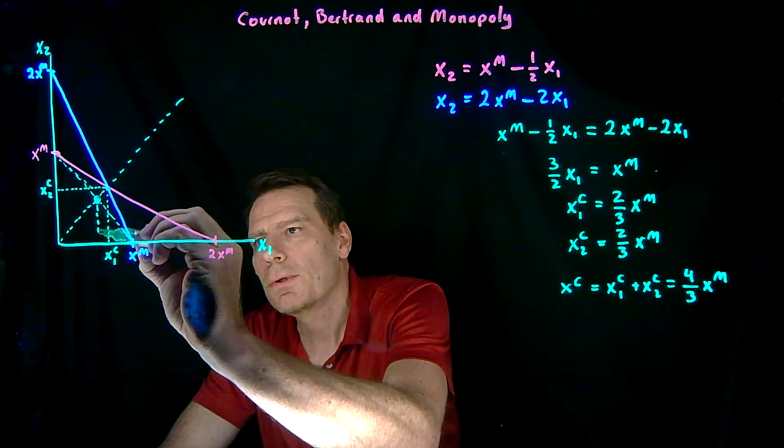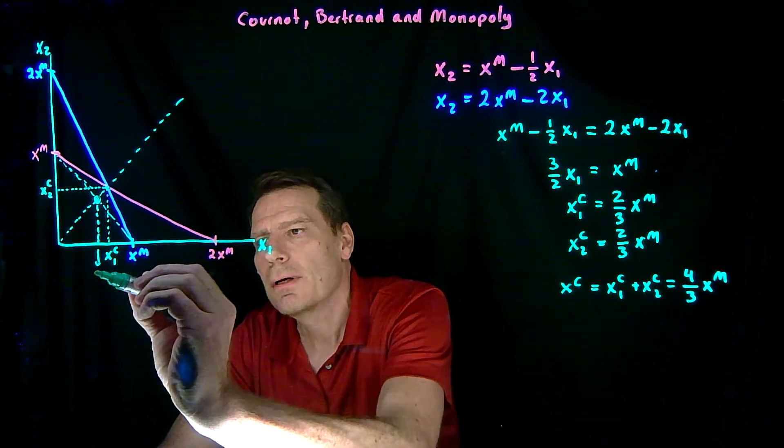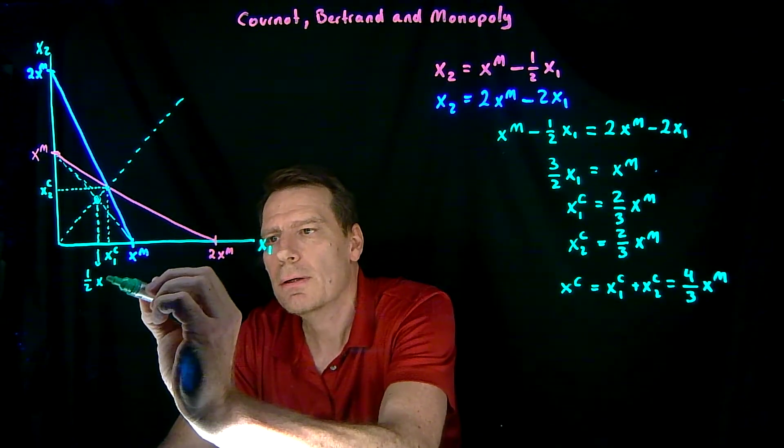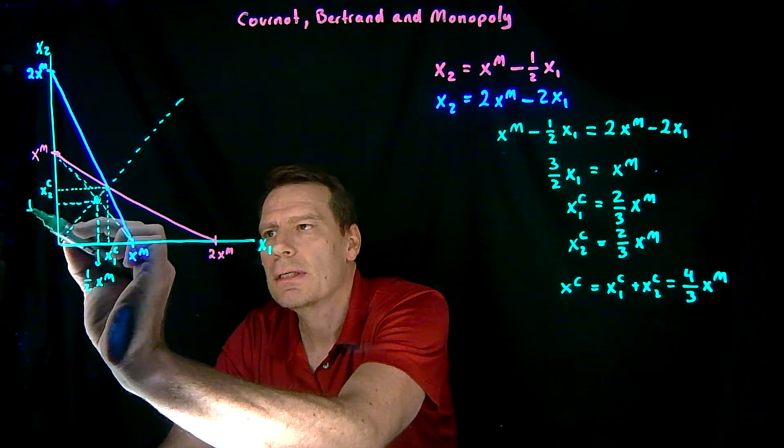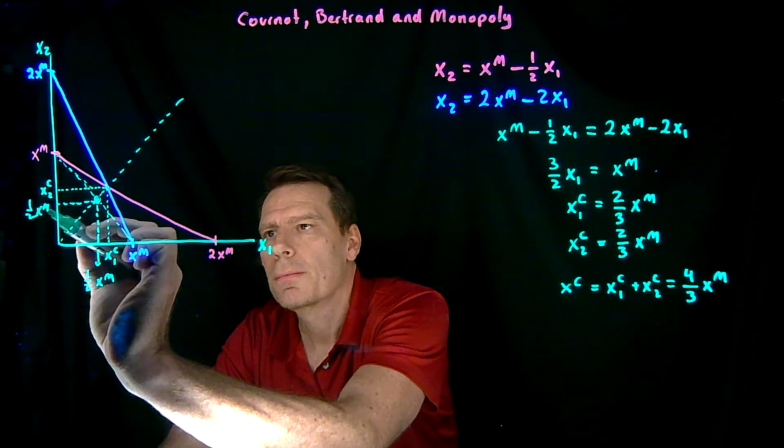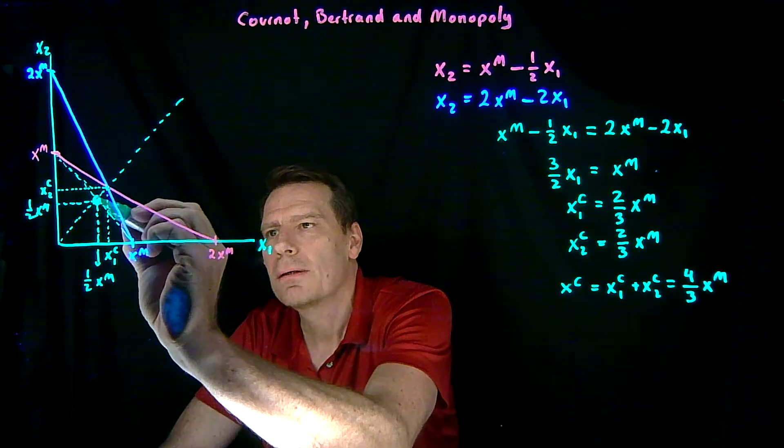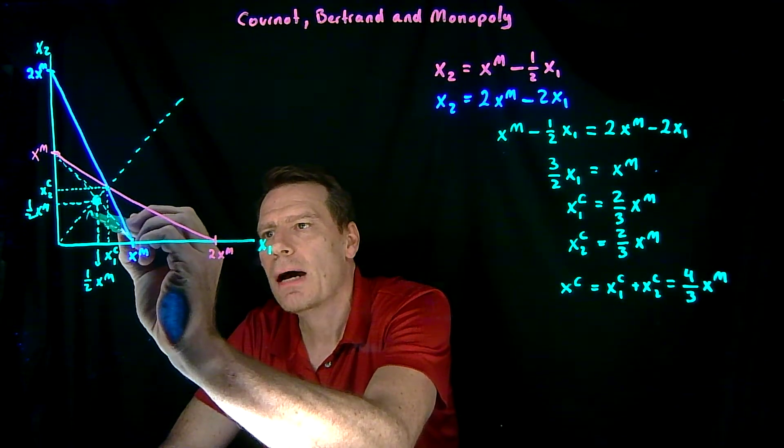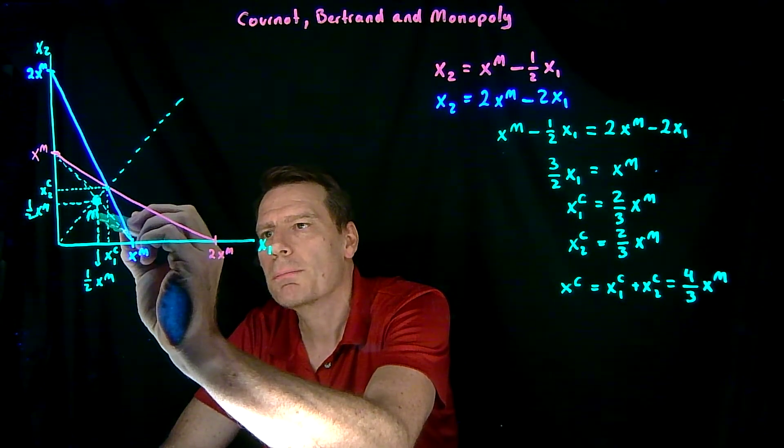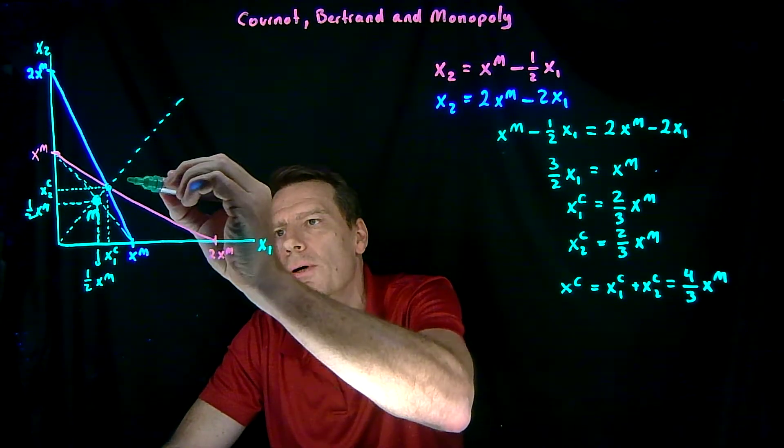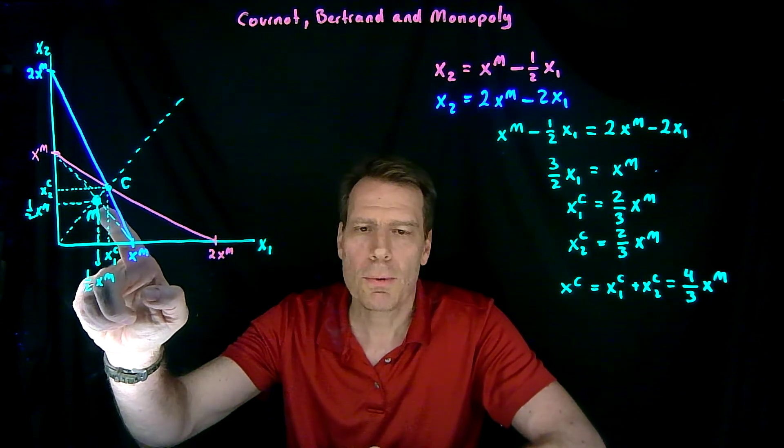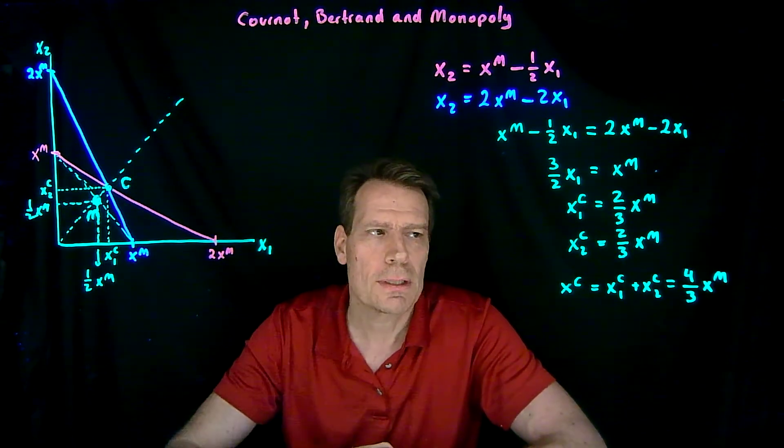So at that point, we would get 1 half times the monopoly quantity here, and 1 half times the monopoly quantity here. So this point would be the monopoly point if the two firms were behaving as a single monopoly, and this point here would be the Cournot point. The monopoly quantity is less than the Cournot quantity.